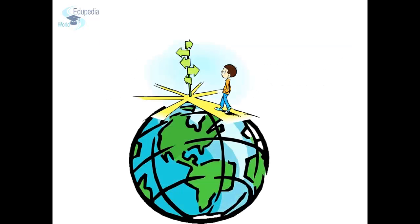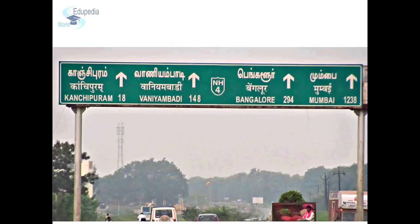Our Earth is a large planet. It has a radius of more than 6,000 km and a circumference of more than 40,000 km. Most of its surface is covered with water and some covered with land. Locating a place on such a big Earth is like finding a needle in a haystack. To locate any place on Earth, we need to know its distance and direction from another known place or point, which is called a reference point.